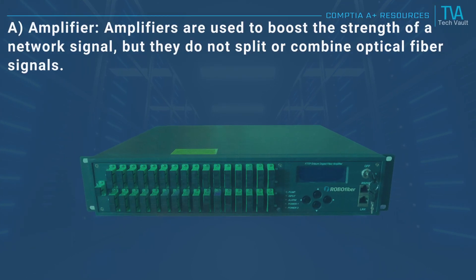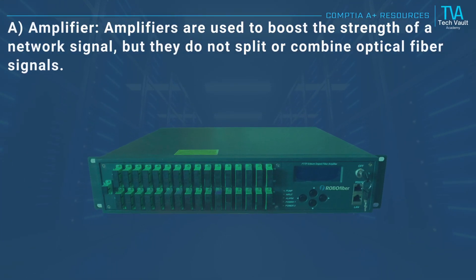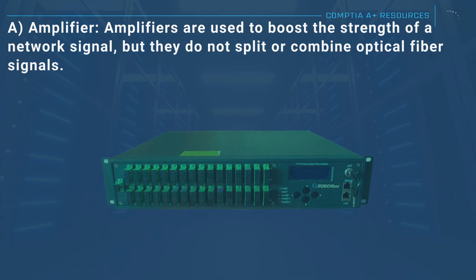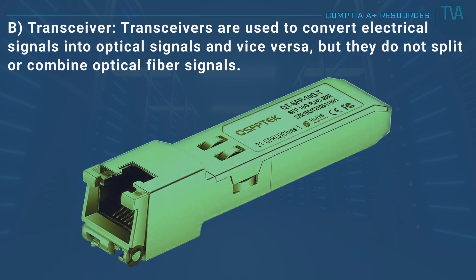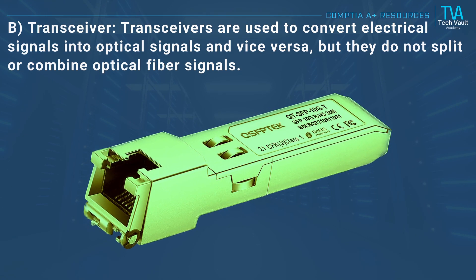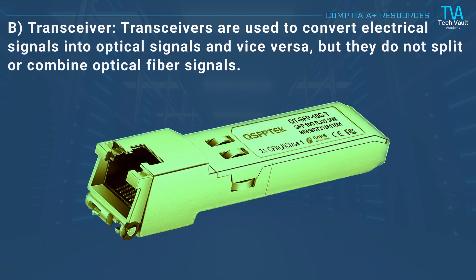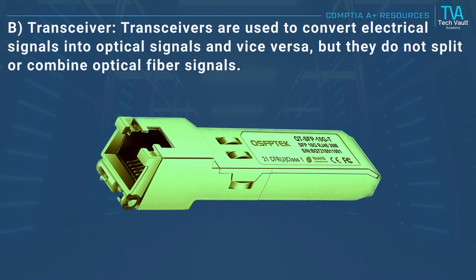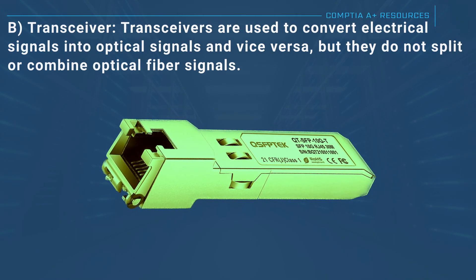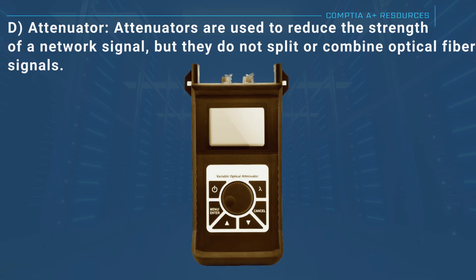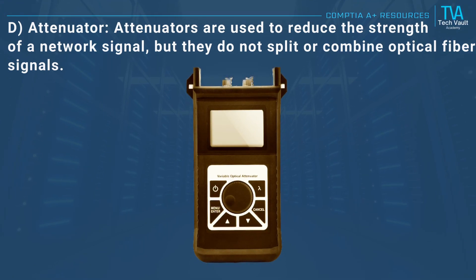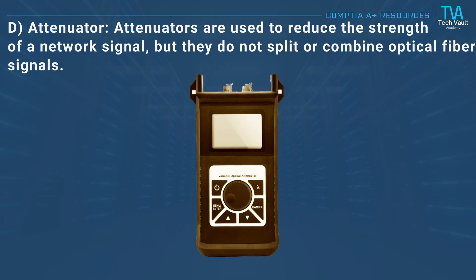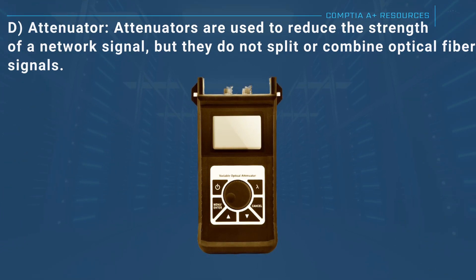A, amplifier: amplifiers are used to boost the strength of a network signal but do not split or combine optical fiber signals. B, transceiver: transceivers are used to convert electrical signals into optical signals and vice versa, but they do not split or combine optical fiber signals. D, attenuator: attenuators are used to reduce the strength of a network signal but do not split or combine optical fiber signals.